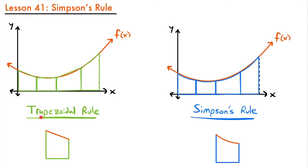You can think of the trapezoidal rule as an approximation of the area using linear functions. So if we were to look at one individual trapezoid, the top of the trapezoid that we are using to try and match the shape of our function is a linear function, or a first-degree polynomial — a function like 2x plus 1 or x plus 3, an equation where x is to the first power.